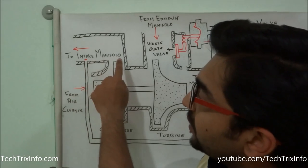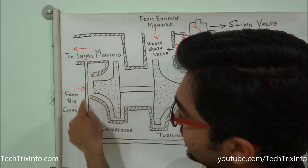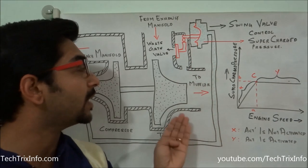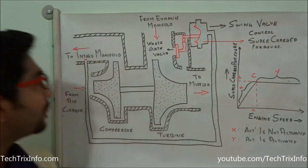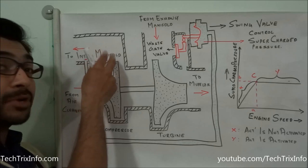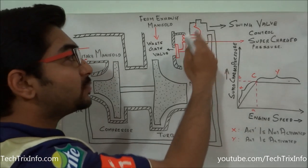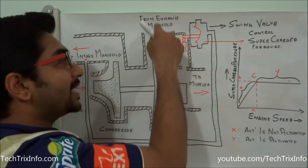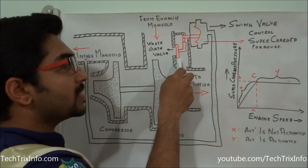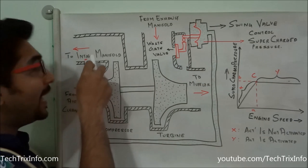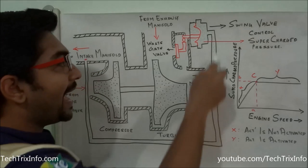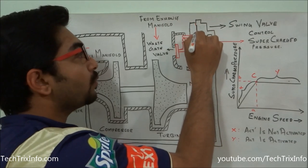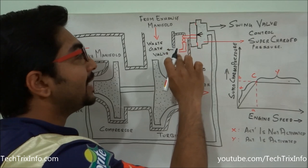To avoid that, you can see that the intake manifold is directly connected via a line going towards the wastegate valve. This wastegate valve is installed in the exhaust circuit just before the turbine. So if the combustion air pressure in the intake manifold exceeds the recommended level, that pressure gets reflected in this swing valve. When the pressure exceeds the recommended level, the swing valve moves because of that pressure, resulting in the wastegate valve opening up.